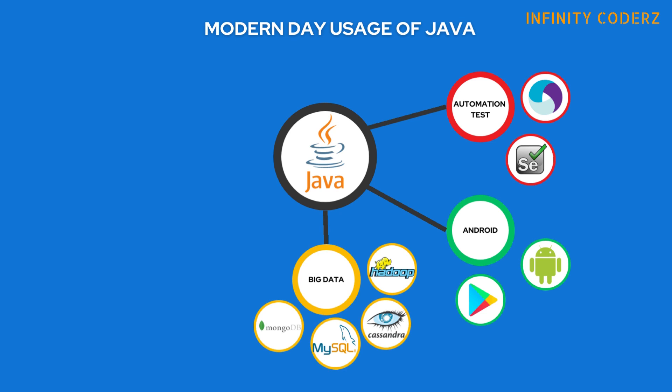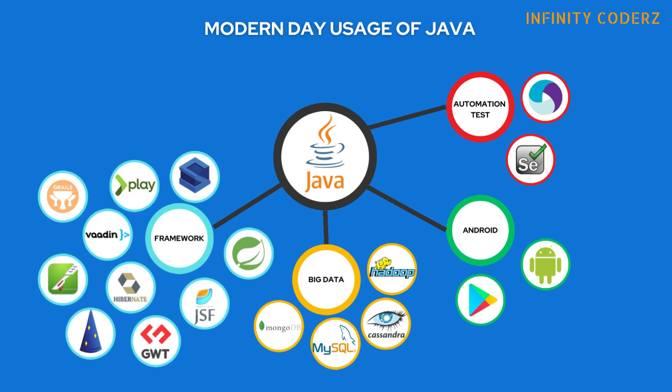Big Data: Java is frequently employed in the field of big data processing and analytics. Apache Hadoop, a popular framework for distributed processing of large datasets, utilizes Java extensively. Java-based libraries like Cassandra and Kafka are also prevalent for real-time stream processing and batch processing of big data. Frameworks: Java boasts a plethora of frameworks that aid in developing scalable and maintainable applications. One notable example is Spring Framework, which provides a comprehensive set of features for building enterprise-level Java applications. Spring Boot, a part of the Spring ecosystem, simplifies the development of standalone, production-ready applications.